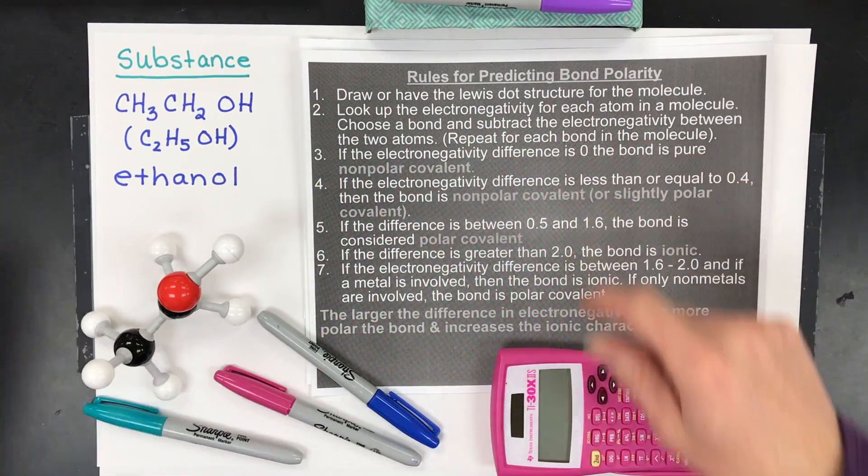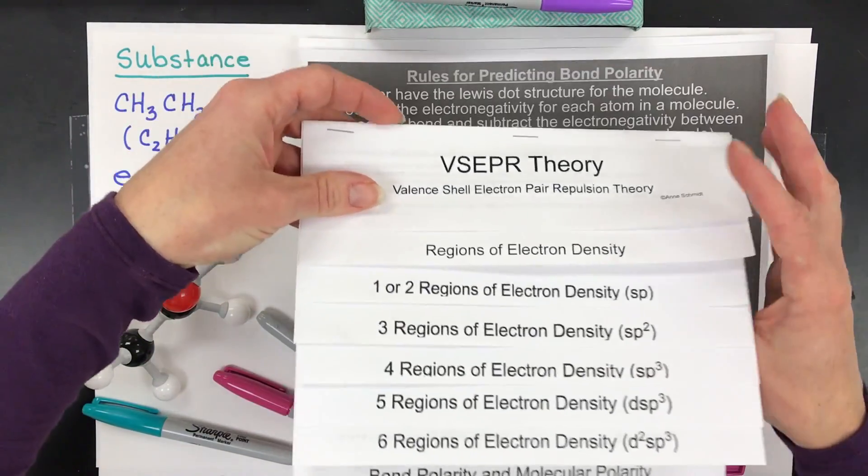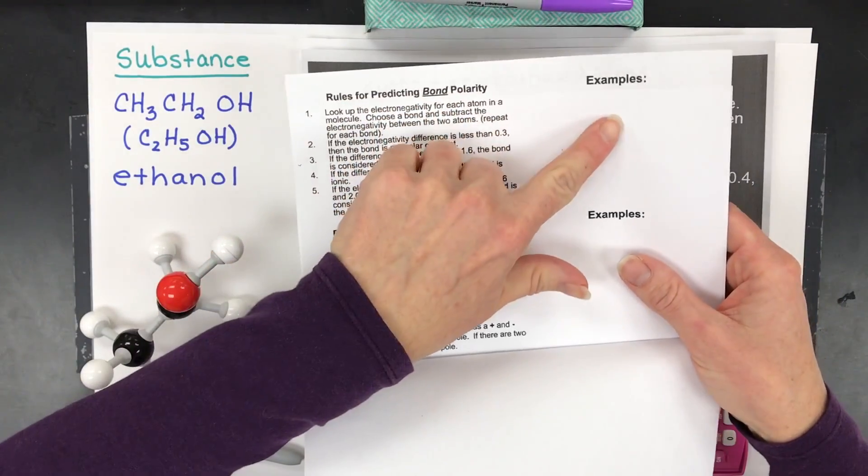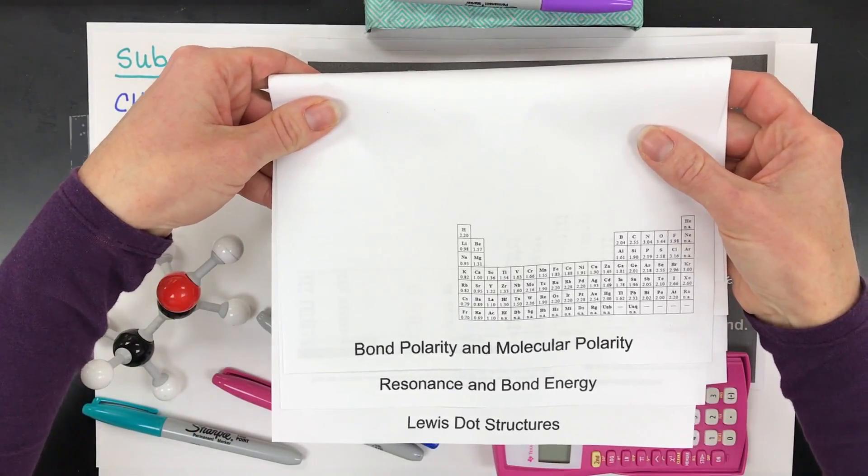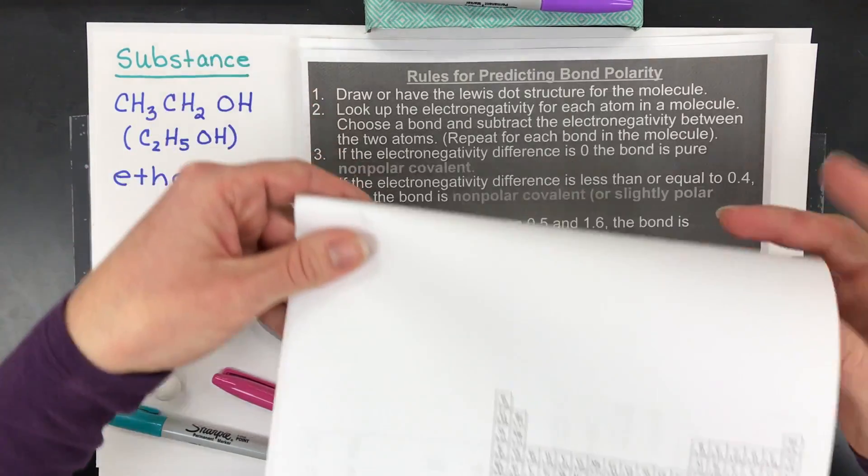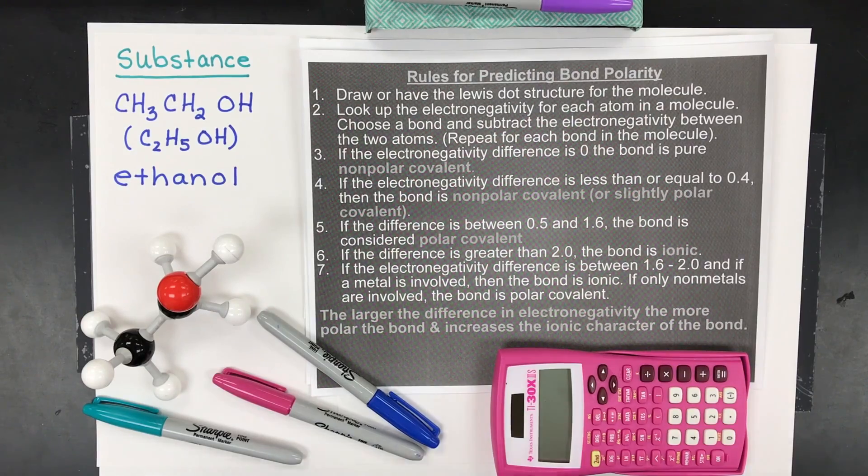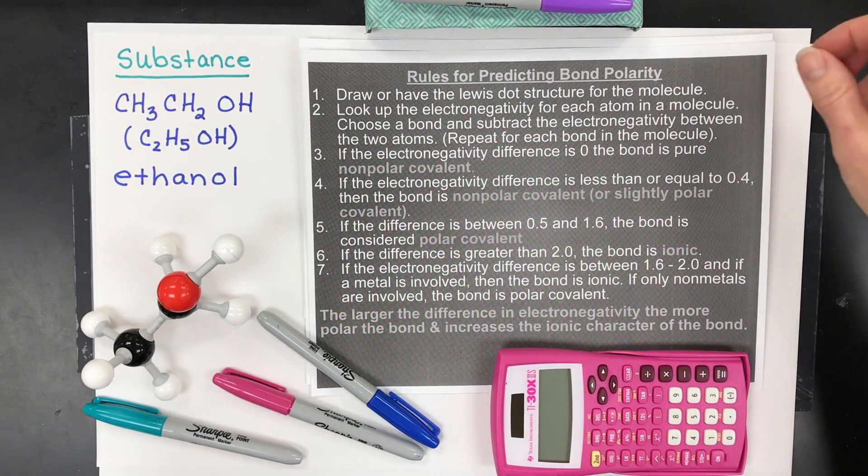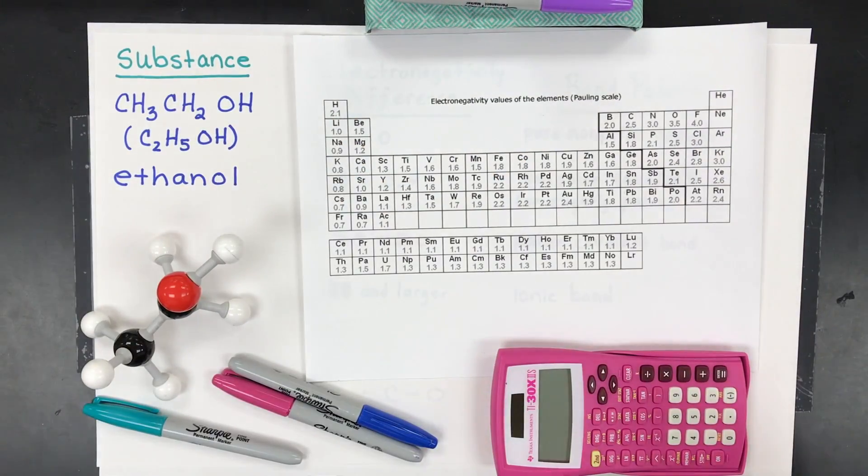First thing you need to do is have these rules. My students have them on their foldable right here, so bond polarity, molecular polarity. They open it up. There's the rules. This is where they should write their examples when they watch this video. And they have an electronegativity table also. You're going to need to have one of those. So if you don't have the rules, write them down. If you don't have an electronegativity table, find it in the book or print one. So here's mine. I'm going to use this one during the video.